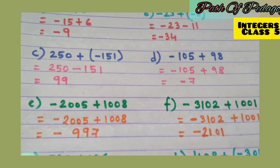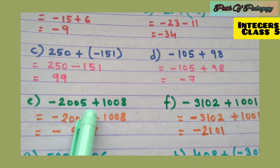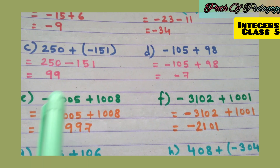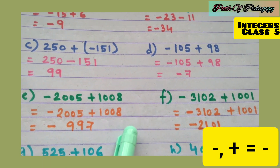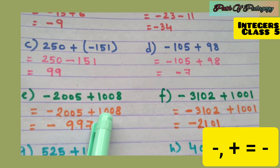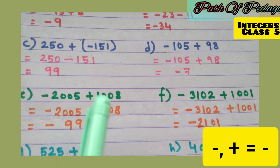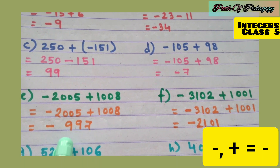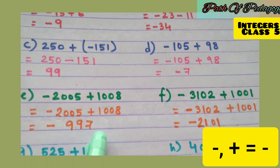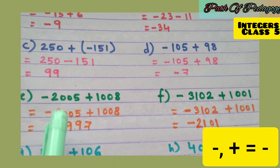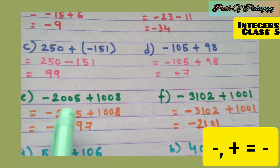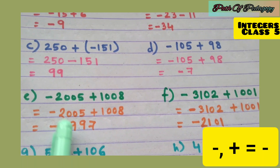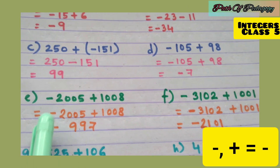Question e: −2005 + 1008. Minus plus is always minus, so we subtract: 2005 − 1008 = 997. The bigger number is 2005 and its sign is minus, so the answer is −997.